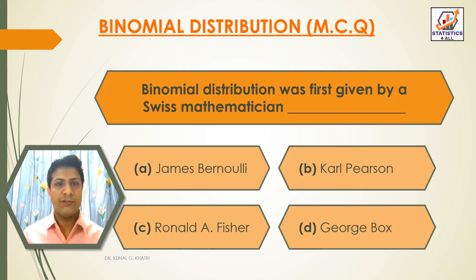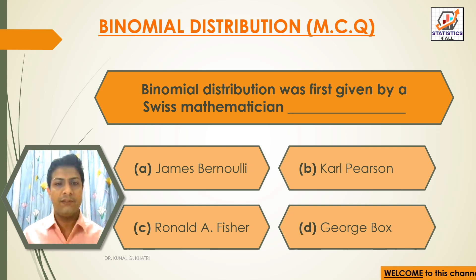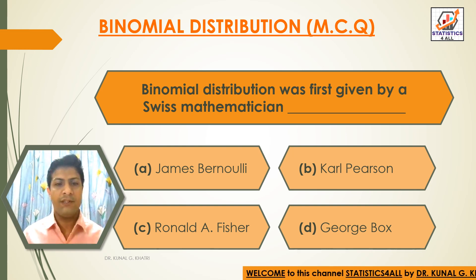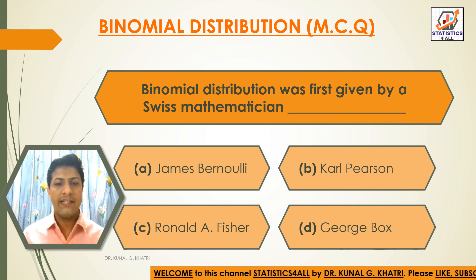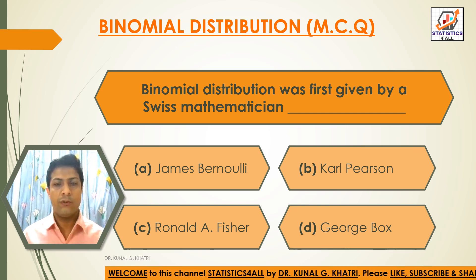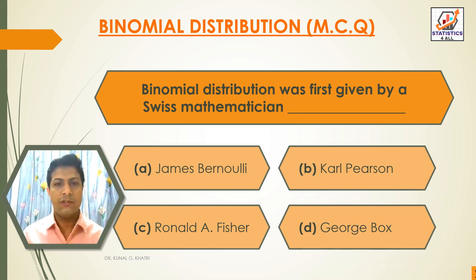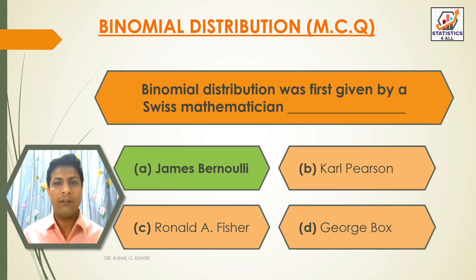First question: Binomial distribution was first given by a Swiss mathematician. Option A: James Bernoulli. Option B: Carl Pearson. Option C: Ronald A. Fisher. Option D: George Box. The answer is option A — James Bernoulli. Binomial distribution was first given by Swiss mathematician James Bernoulli.